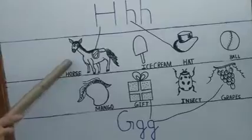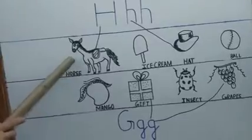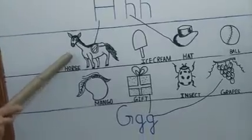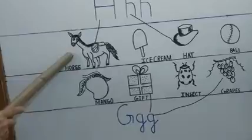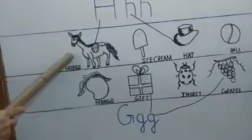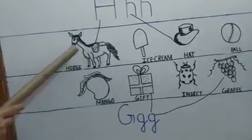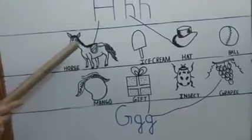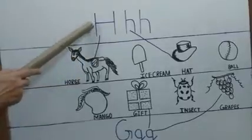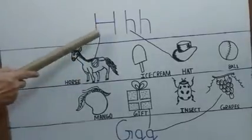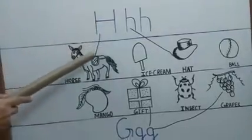What is this? This is a horse. And what is the phonic sound of horse? That is H — horse. So we will match this picture with this phonic sound. H, horse.